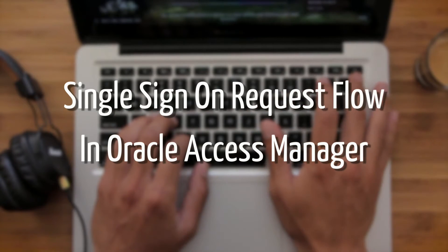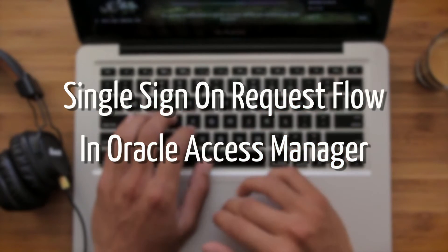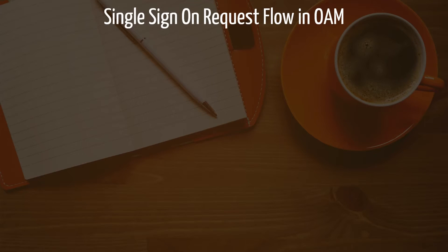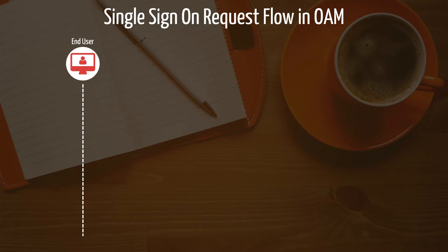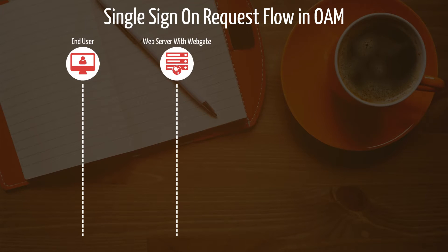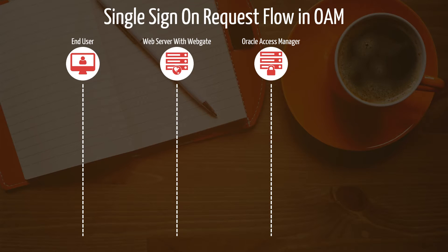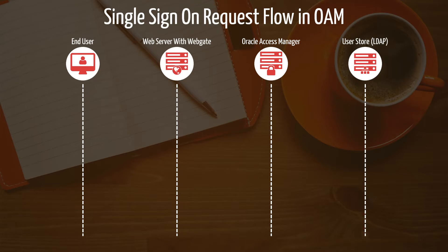Now let me briefly tell you about the single sign-on request flow in Oracle Access Manager. I'll divide the flow into four layers: the end user layer (normally a web browser), the web server layer where the application is hosted and WebGate is installed, the OIAM server which is the core component of SSO where all authentications and authorizations are processed, and finally the user store where user profiles are stored — in my case, Oracle Unified Directory. You can use any compatible LDAP to store your user profiles.